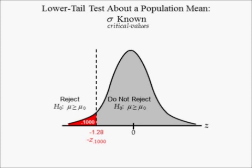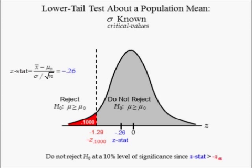Suppose instead the data yields a Z-stat equal to negative 0.26. Here, negative 0.26 is in the do not reject region. Hence, we cannot reject the null hypothesis at a 10% level of significance since the Z-stat is greater than the critical value in this lower tailed test.